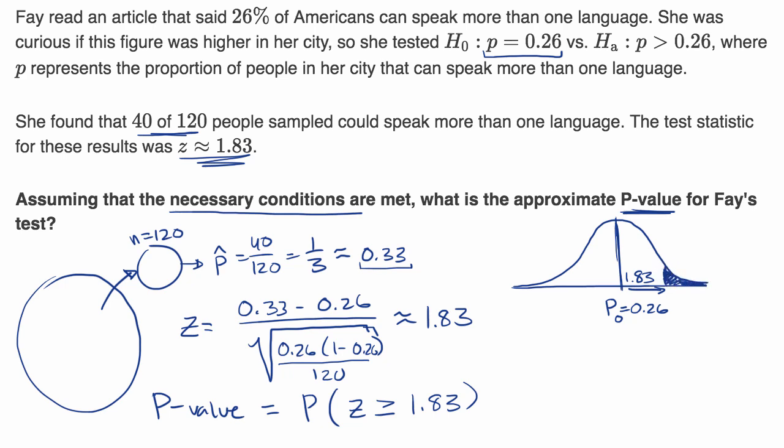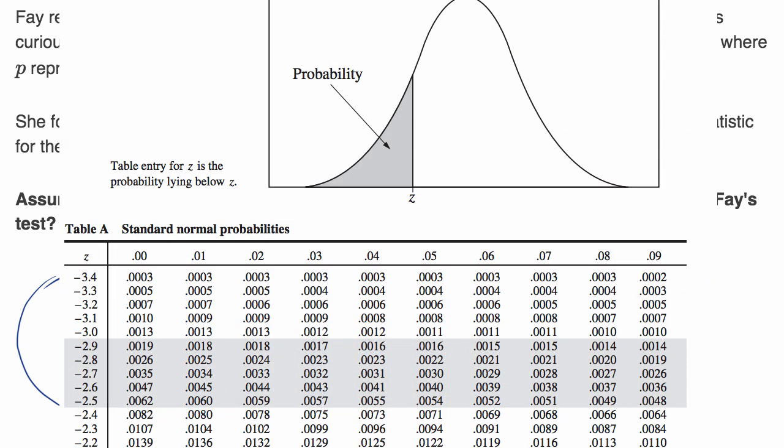So now let's get our z-table. So notice this z-table gives us the area to the left of a certain z-value. We wanted it to the right of a certain z-value. But a normal distribution is symmetric. So instead of saying anything greater than or equal to 1.83 standard deviations above the mean, we could say anything less than or equal to 1.83 standard deviations below the mean. So this is negative 1.83.